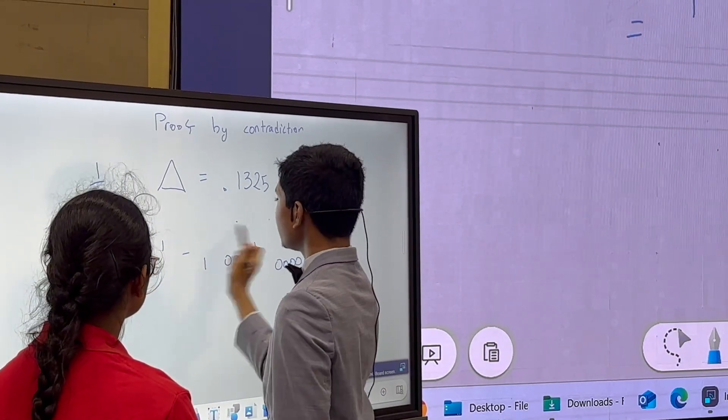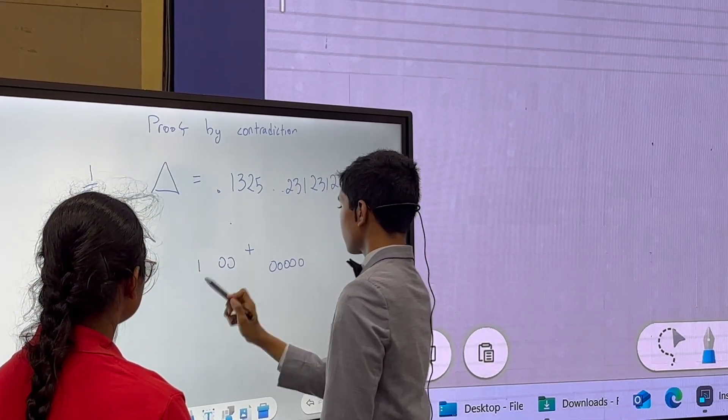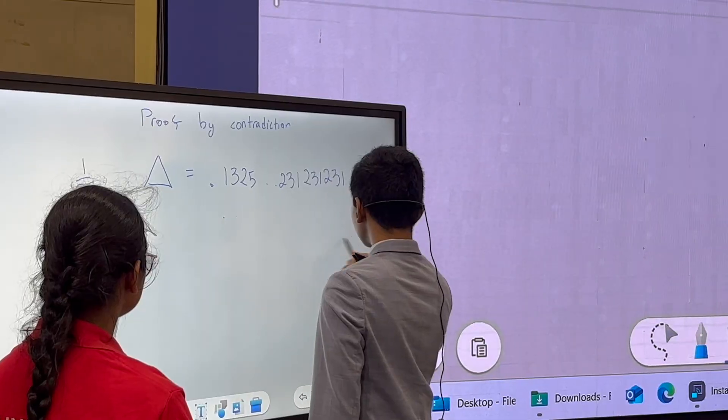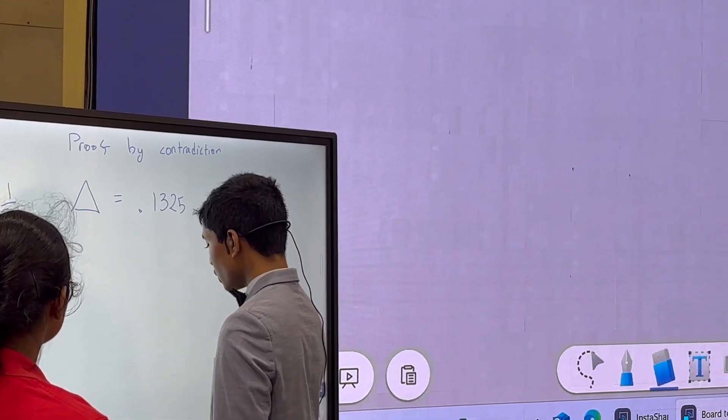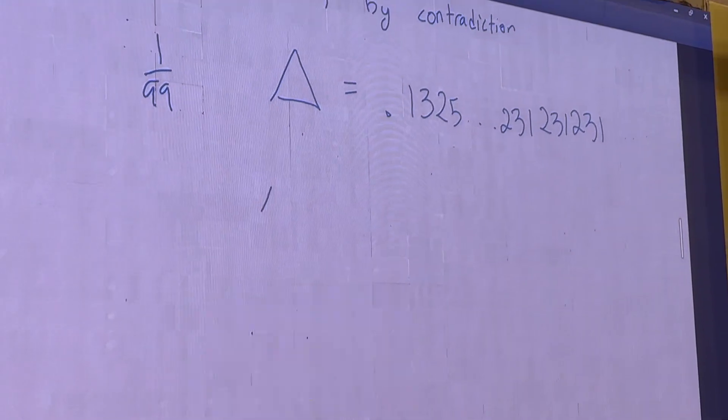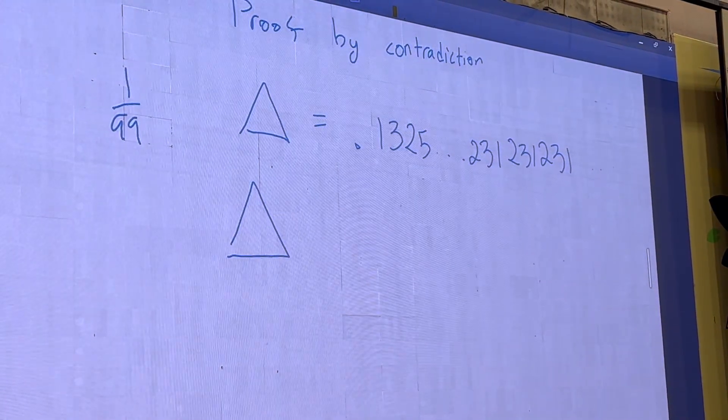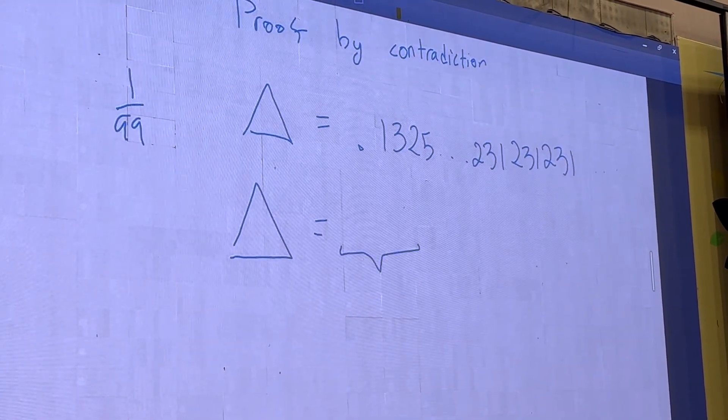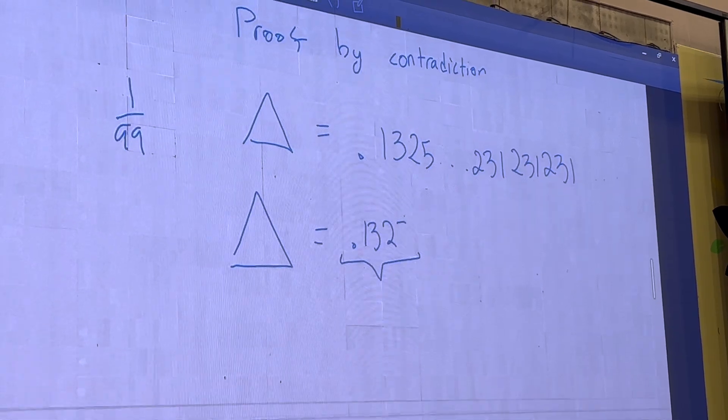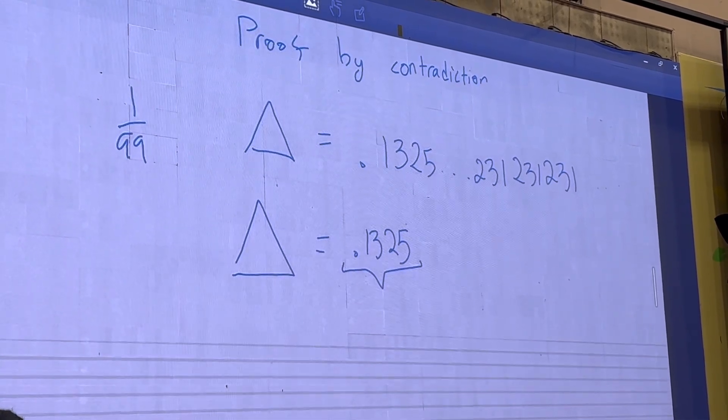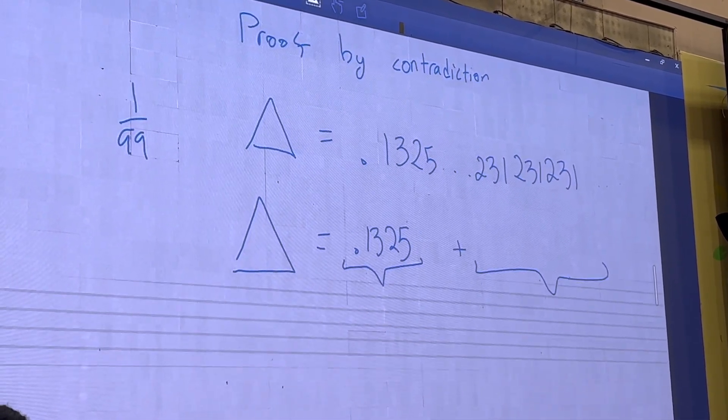Well, if it has a repeating decimal expansion, first, what I'm going to do is I'm going to break that number into two parts. Part number one is the part that doesn't repeat, which has to be finite by definition. And part number two is whatever repeats.